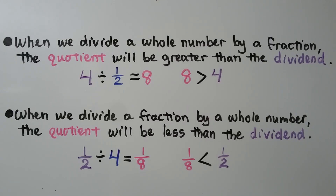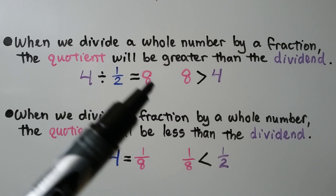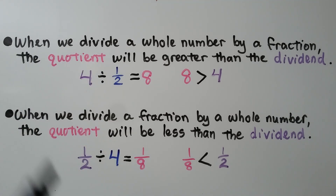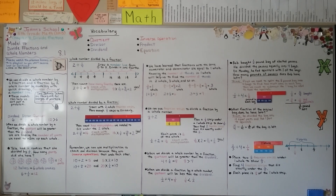Remember the difference between dividing a whole number by a fraction and a fraction by a whole number. When dividing a whole number by a fraction, the quotient will be greater than the dividend. When dividing a fraction by a whole number, the quotient will be less than the dividend. Our next lesson, 8.2, will cover word problem solving using multiplication and drawing a diagram to do fraction division problems. I hope to see you there, and I hope you have a wonderful day!